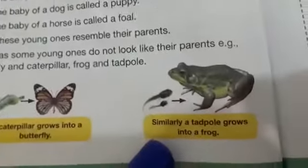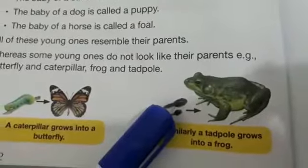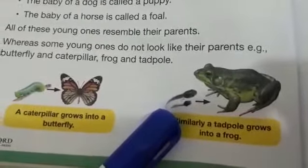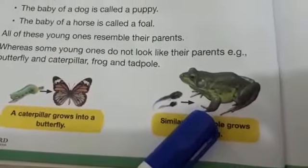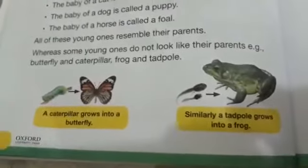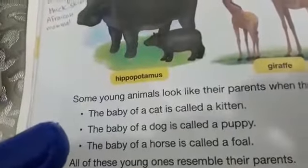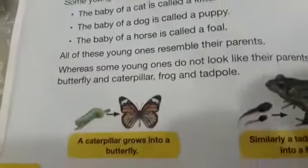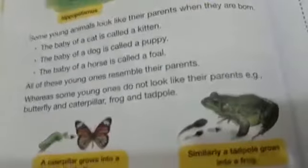Similarly, a tadpole grows into a frog — these are the tadpoles, and after that they grow up and turn into a frog. That's why these are different. You can see clearly the difference — some animals look like their parents, and others like the caterpillar turn into a butterfly or the tadpole grows into a frog.